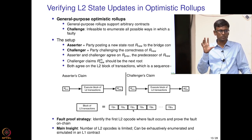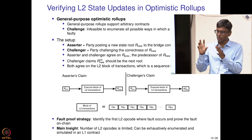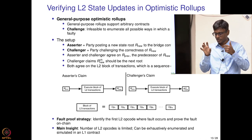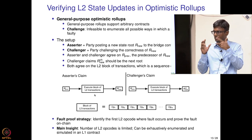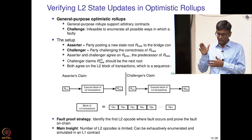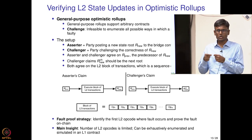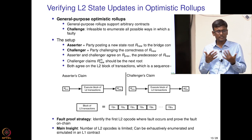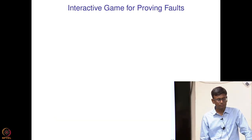Once the first differing opcode is identified and the inputs are known from the layer 2 transactions, the challenger and assertor will differ only in what the output is for the same inputs and same opcode. That opcode is then executed in the bridge contract, and the bridge contract can verify whose claim is correct. To find this first opcode, the challenger and assertor play something called a bisection game — an interactive game for proving faults.